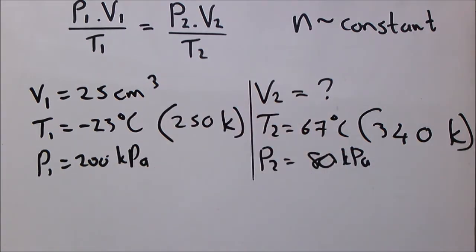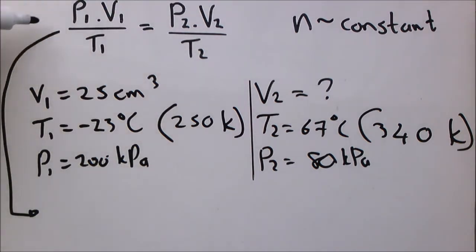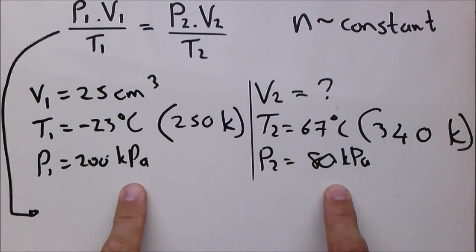So now we're in a position where we can actually solve this. V2 is our only unknown. We are going to work with the general gas equation now. You write down the equation first. That's the very first step.